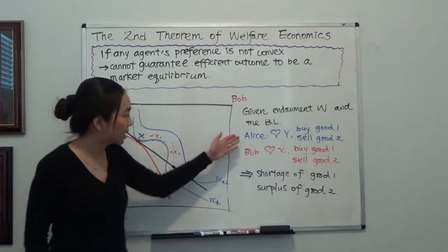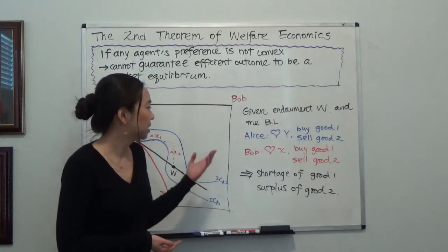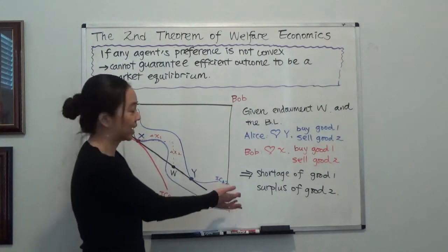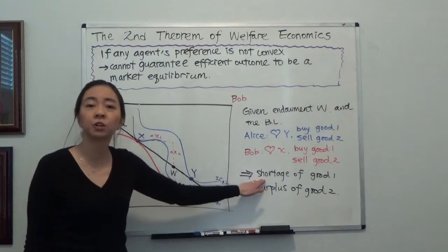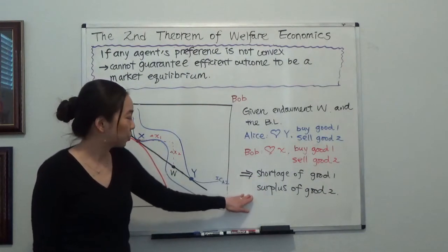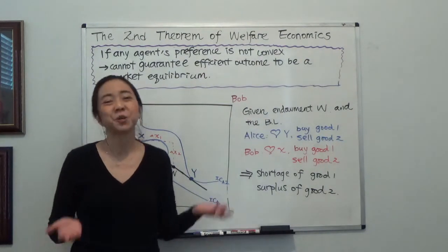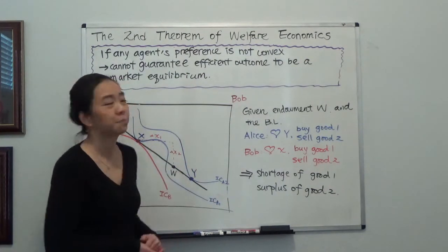So you can see both Alice and Bob are saying, I want to buy more good one, and I want to sell my good two. So both of them are saying that, then that's going to cause a shortage of good one and a surplus of good two. So when we have shortage and surplus, that means our market is not cleared, meaning we do not have market equilibrium.